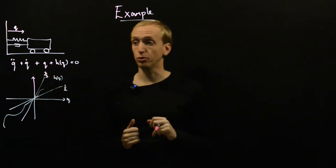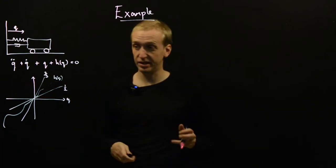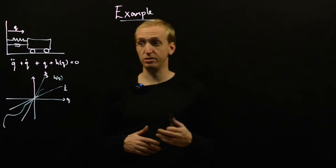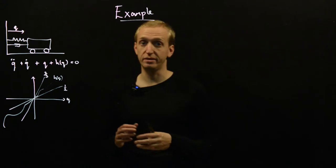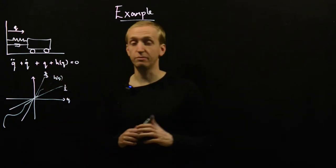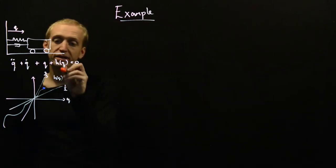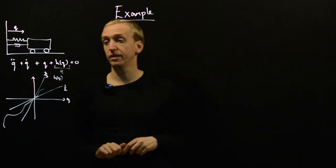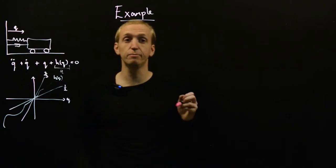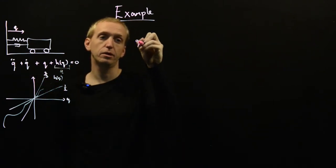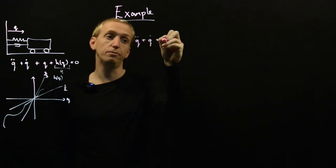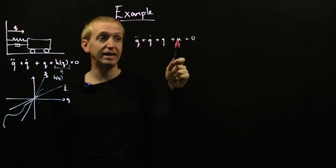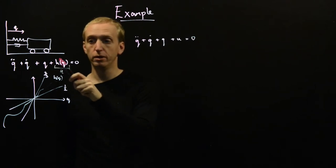So we're able to apply the circle criterion. In order to apply it to this system, the first thing we have to do is put it in standard form: a linear system in feedback with a nonlinearity. We could go through the process for putting nonlinear equations into feedback form like we saw before, but I'm going to show you another way. We're going to call our nonlinear term u. So if our nonlinear term equals some input to the system, the differential equation simplifies to q̈ + q̇ + q + u = 0. This equation is now linear, and the only catch is that u depends on q in a nonlinear way — this is where the feedback comes from.